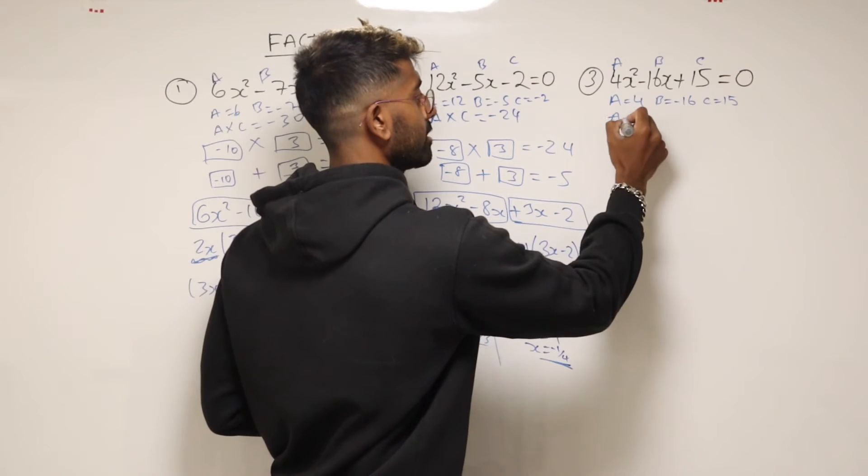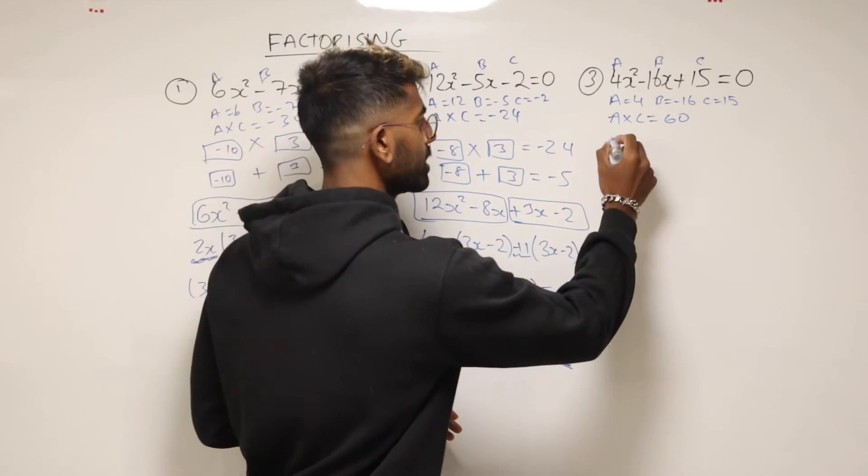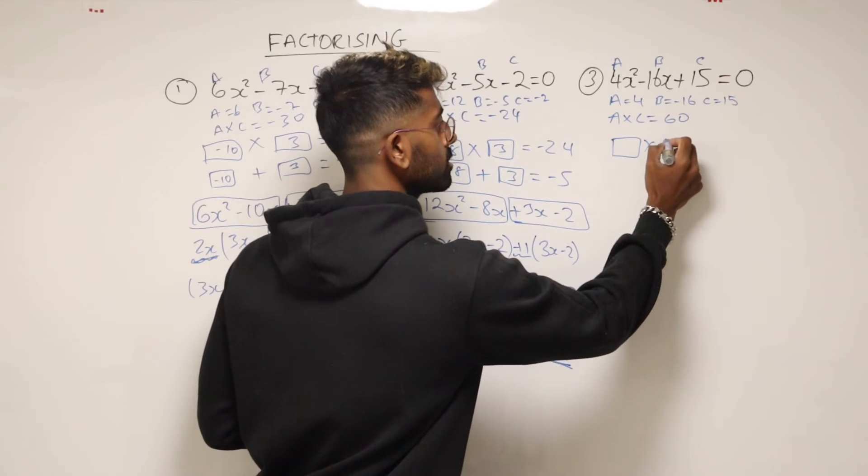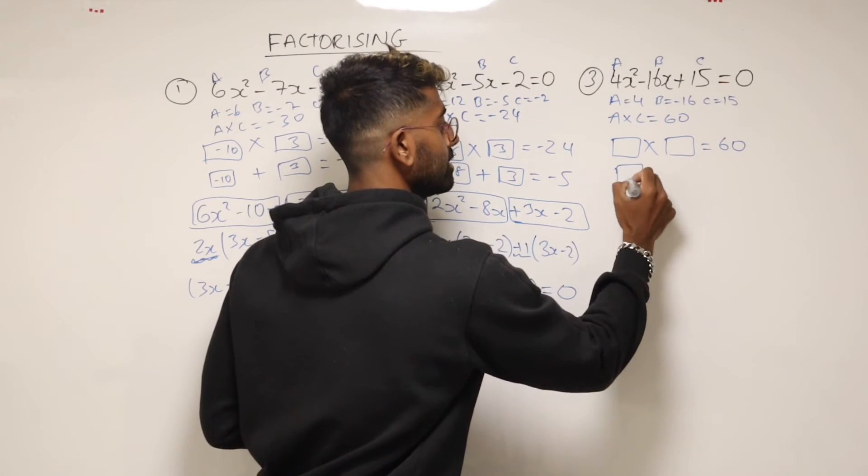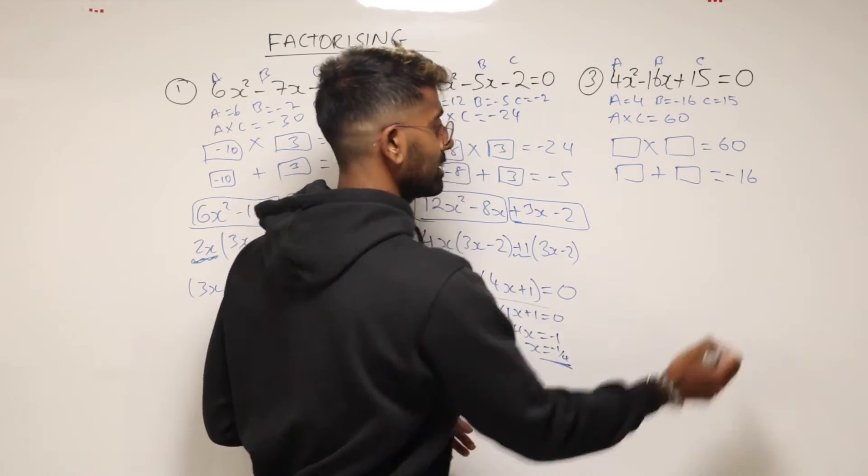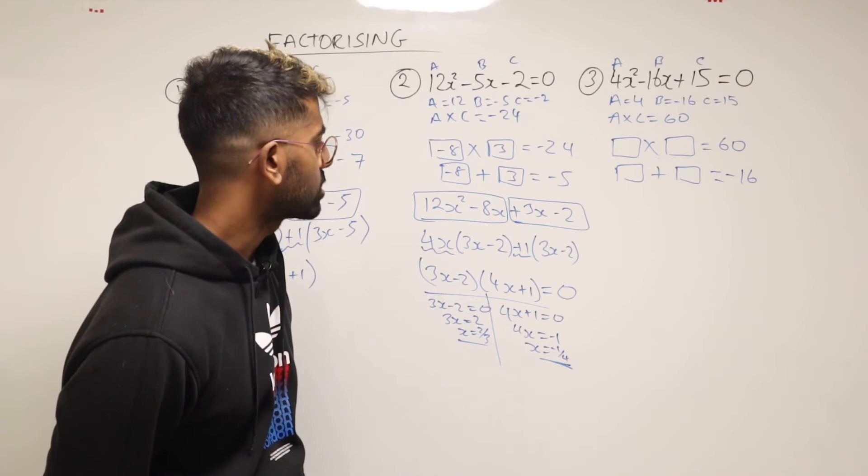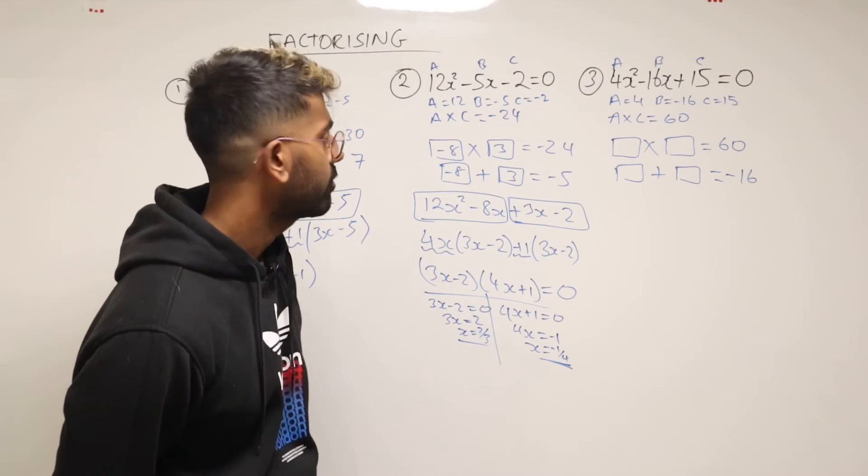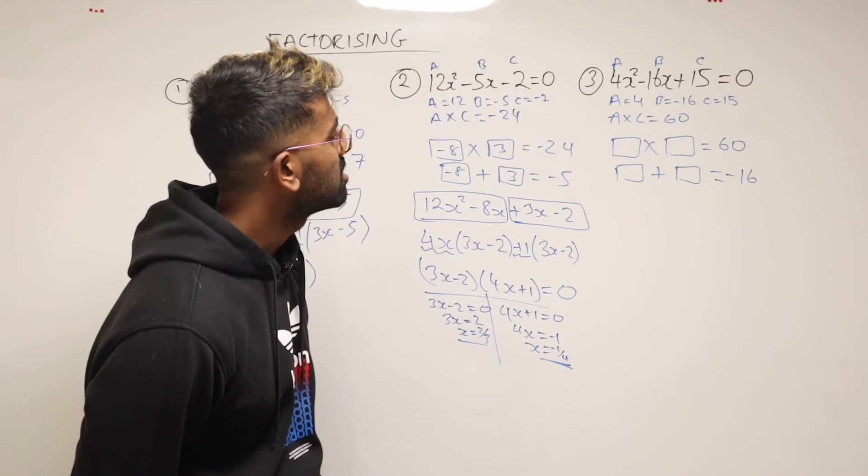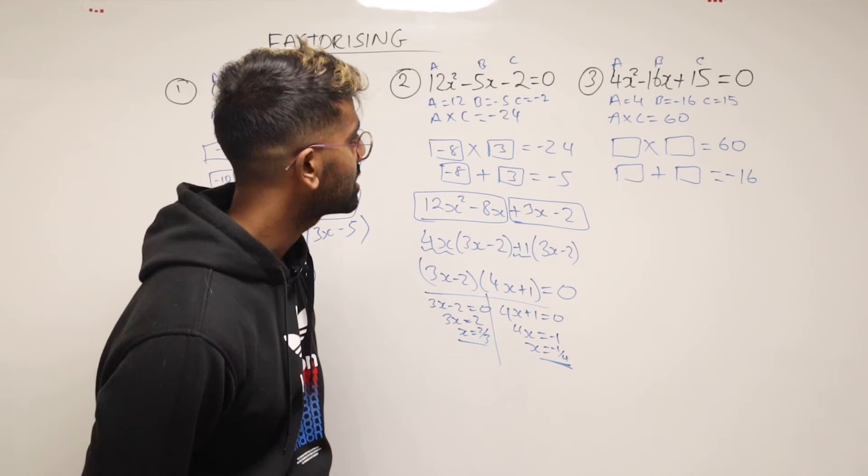So multiply a and c together. a times c is 60. And then we need two numbers that are going to multiply to give me 60. But the same two numbers must add to give me negative 16. So what's that going to be? 3 and 20, 6 and 10.